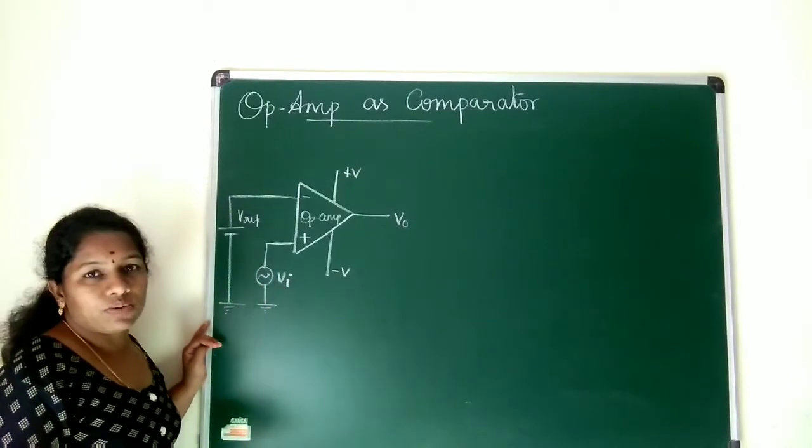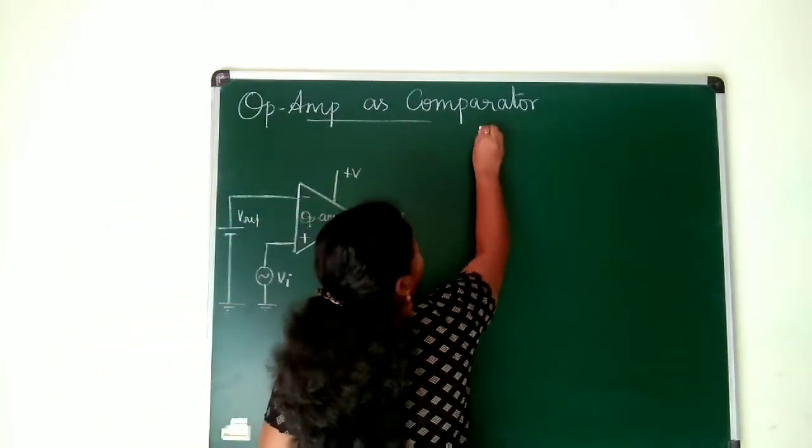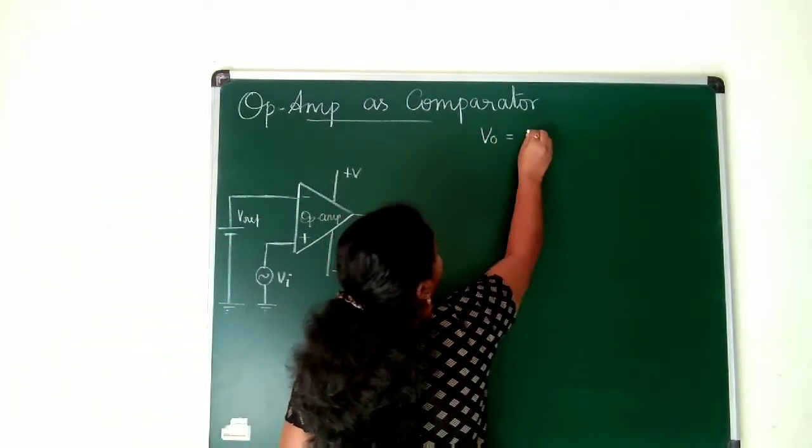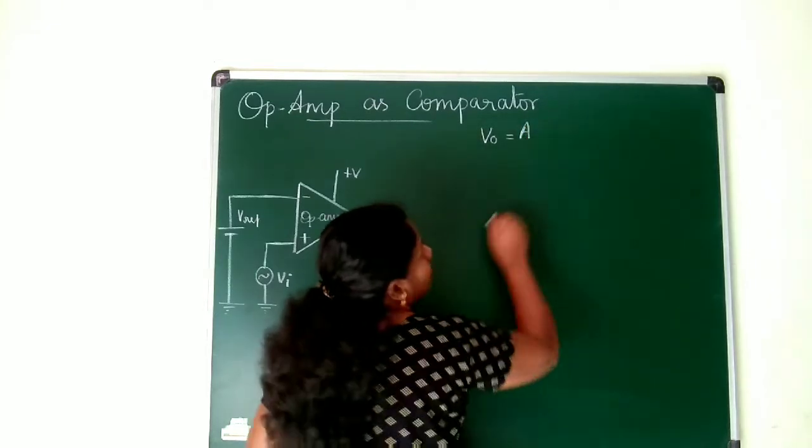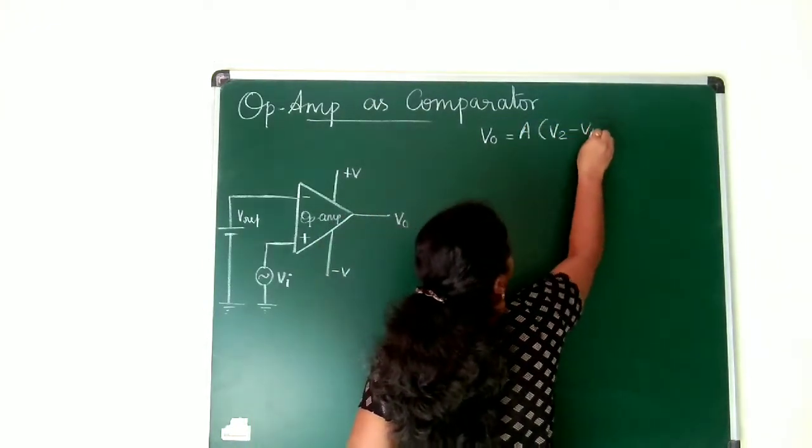Now what happens to my output? Let's check. You know that V0 is equal to what? V0 is equal to open loop gain multiplied by V2 minus V1.